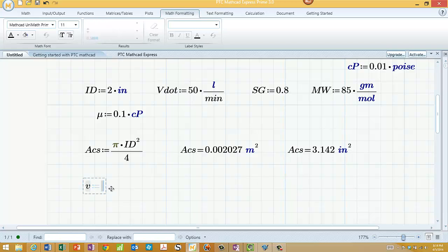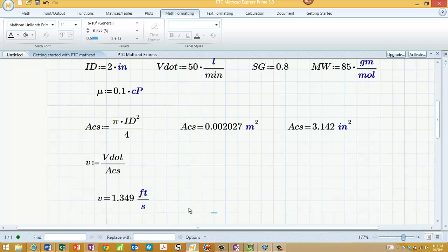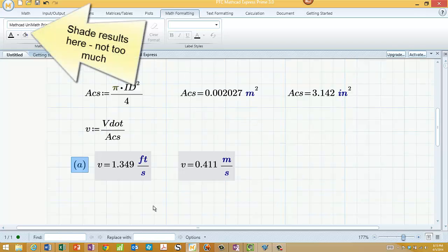And the velocity is just going to be equal to V dot divided by ACS. And again, there it is, 2 feet per second. Velocity here, I will put in is.